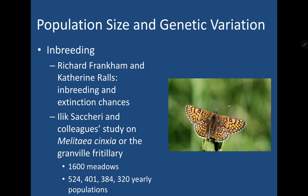Inbreeding, or mating with related individuals, also affects genetic variation. Inbreeding is much more common in a small population because there's less of a choice and more chances of encountering related individuals. Genetic variation decreases with more inbreeding because homozygosity is increased and heterozygosity is decreased in the offspring and consequently in the population.